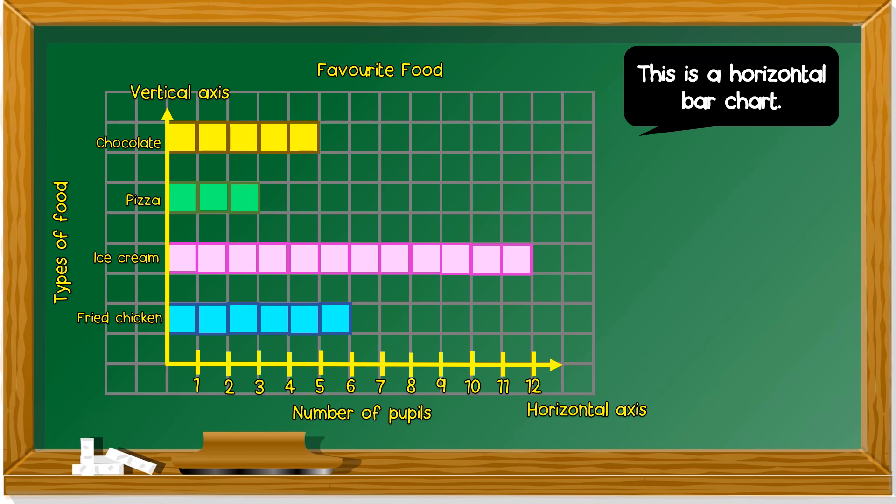Let's take a look at the numbers. Chocolate. We look at the first one. Chocolate. Chocolate has five. So five pupils like chocolate.